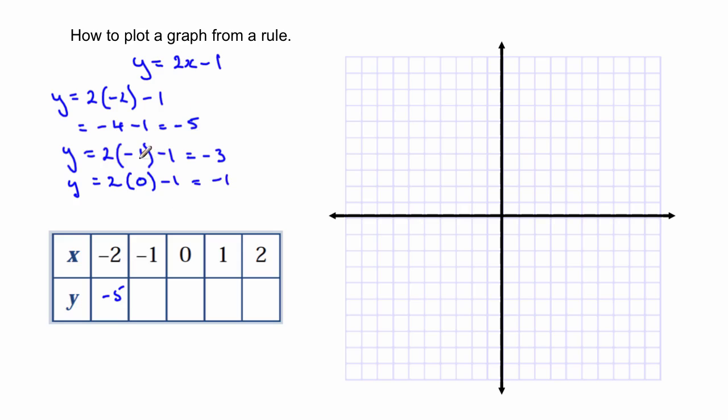So when x is minus 1 the overall value of y is minus 3, and when x is 0 we get y equal to minus 1. We'll replace the other ones in the same way. Y is equal to 2, replace it with a 1 and subtract 1. So 2 times 1 is 2, 2 take 1 is 1. So in it goes.